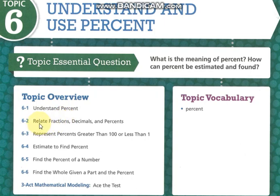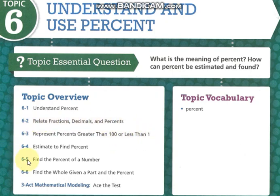We have these lessons: understand percent, relate fractions, decimals and percent, represent percent greater than 100 or less than 1. Then we are going to the lesson 'find the percent of a number' and 'find the whole given a part and the percent.'